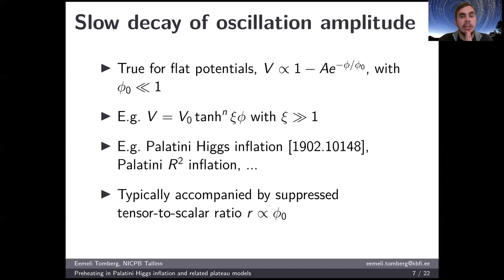One more word at this point about these potentials. These potentials of the form that I have shown here actually also have small tensor-to-scalar ratios r. These are proportional to this φ₀ value. So typically in these potentials where the oscillation amplitude is slow, one also has a tensor-to-scalar ratio which is smaller than what is observable in the foreseeable future.